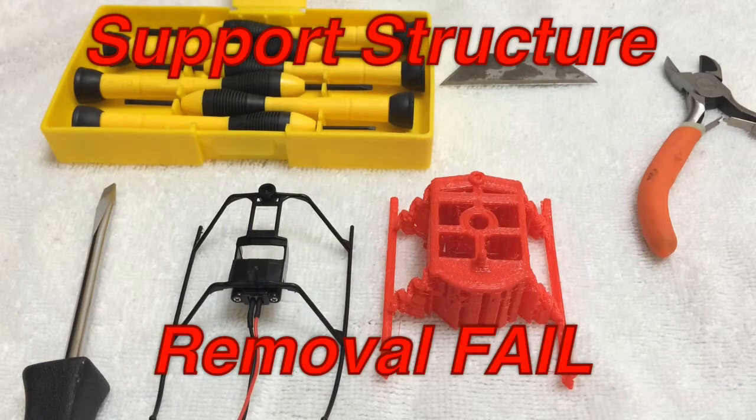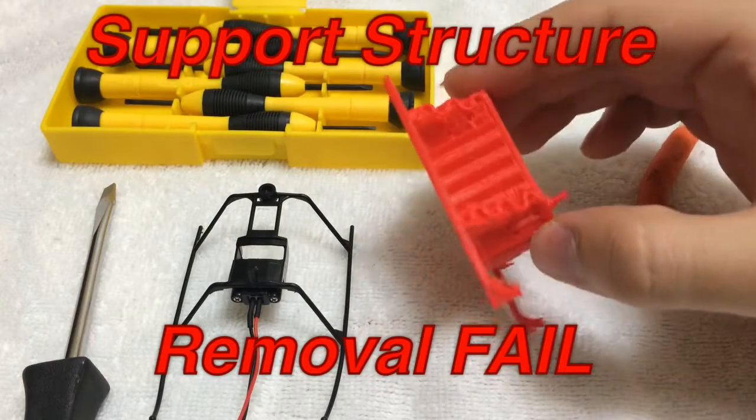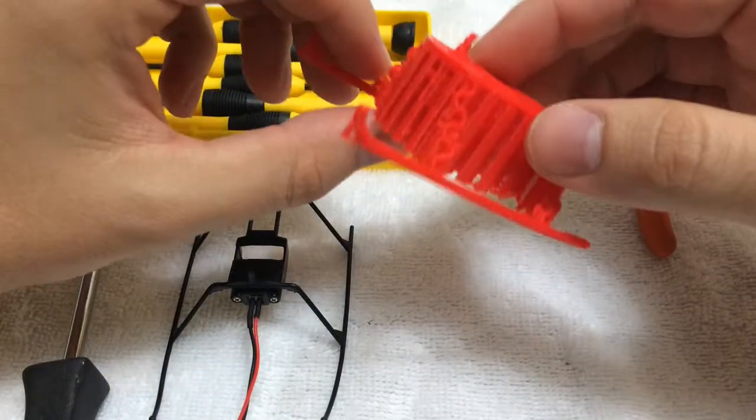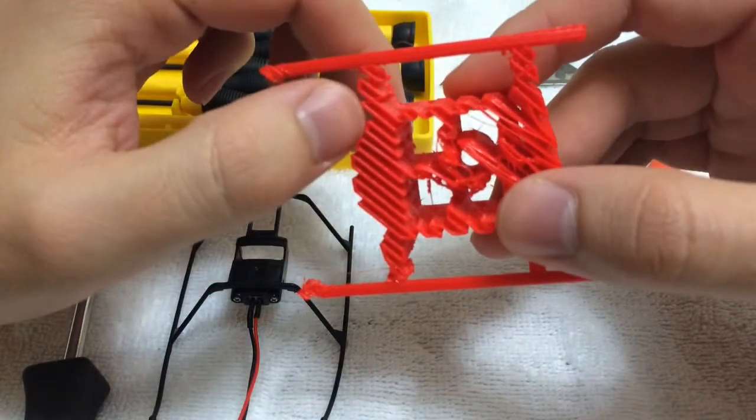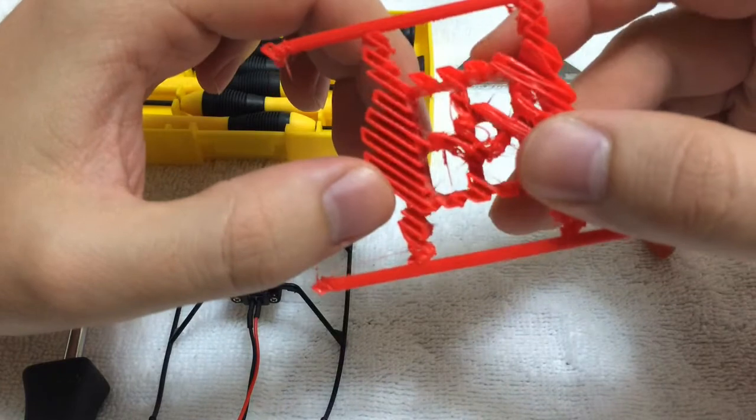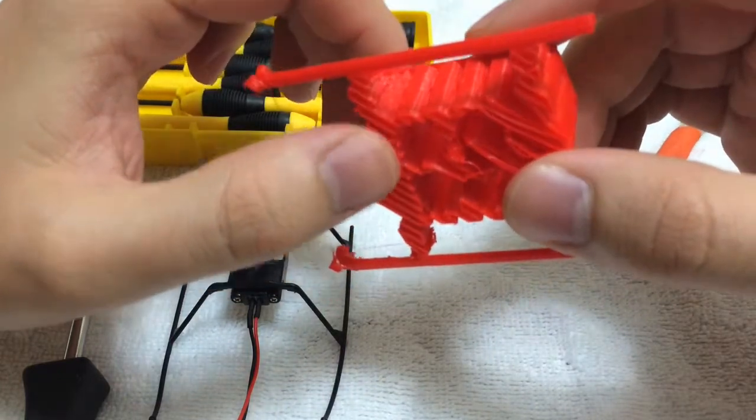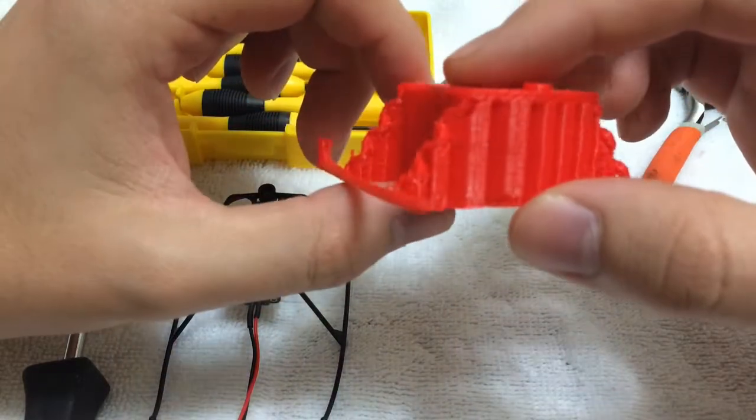In this video, I'm going to take my landing gear that I printed for my helicopter and try to take off the support structure. As you can see, it printed really nicely over here, and this is where I had probably better glue on my heating bed versus on this side. It was messy, but since it's support structure I'm going to be removing, that doesn't matter.